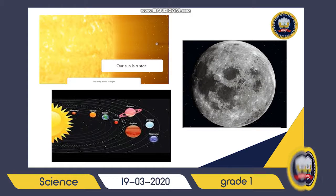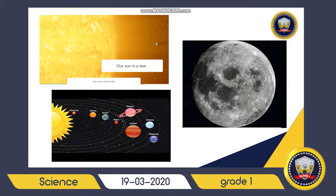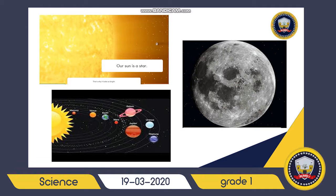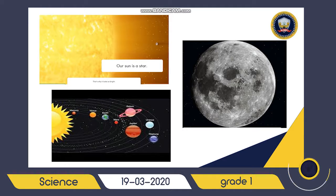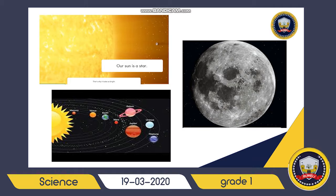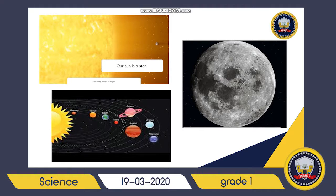Now we want to talk about the moon. We can see the moon at night time. What is the moon? The moon is a large sphere — we can see the moon as a ball of rock.